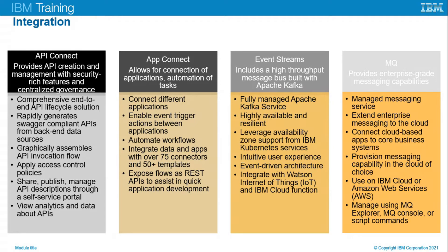Event Streams includes a very high throughput message bus built with Apache Kafka. It is a fully managed Apache Kafka service built with open source Apache Kafka projects. It is highly available and resilient, leveraging availability zone support from IBM Kubernetes services so your applications continue to work even if an entire zone becomes unavailable. It provides an intuitive user experience, event-driven architecture, and can integrate with the Internet of Things utilizing Watson and IBM Cloud Functions to leverage event streams.